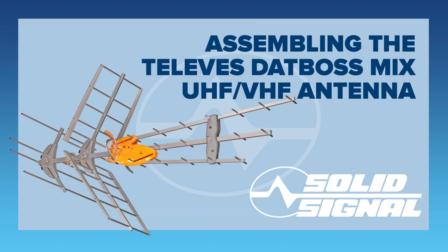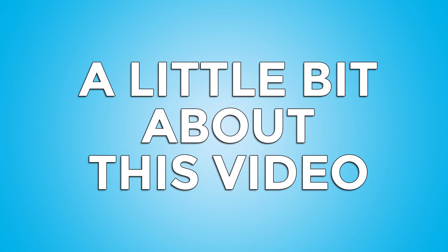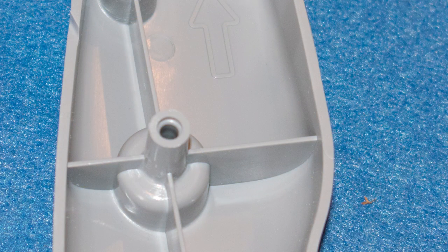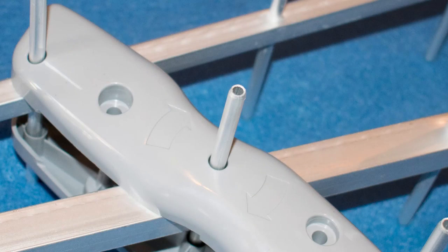This is an assembly video for the Televez DatBoss Mix UHF VHF antenna. This video was originally shot with pre-release hardware, so there are two not terribly important changes. First, the word T-Force is embossed into the orange plastic in the new version. Second, everything that is white in the original video is actually going to be gray in the box that you receive. That's all there is. Let's begin.